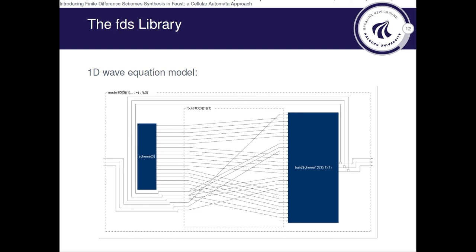Here is shown the scheme for the 1D wave equation finite difference scheme built in a previous slide, but this time coded with the library. So as you can see, the routing section is exactly the same, except that this time each point takes in also the coefficient scheme.